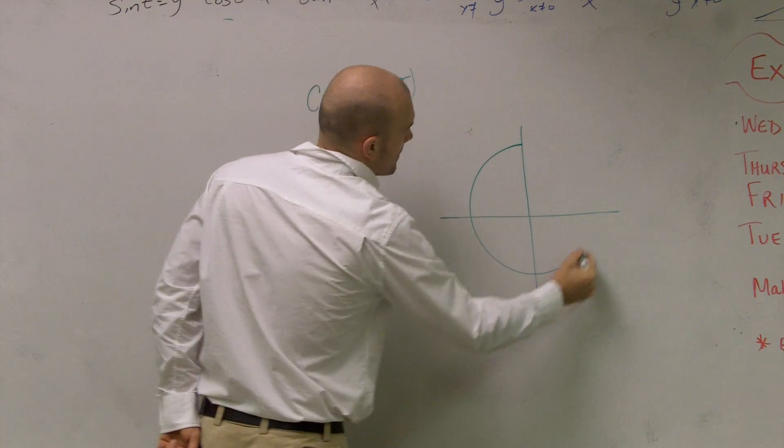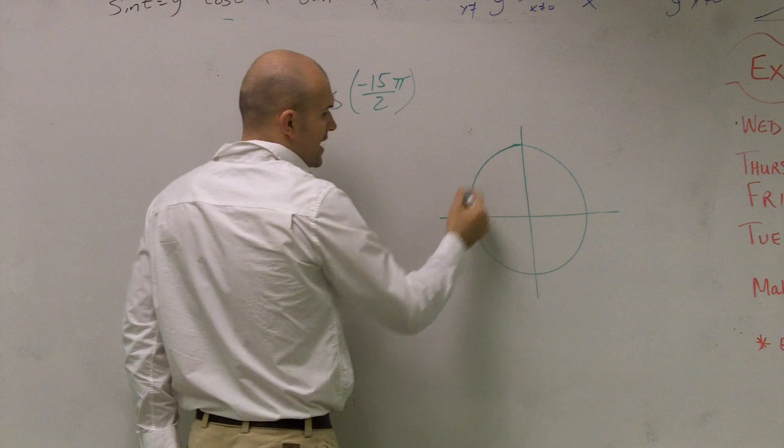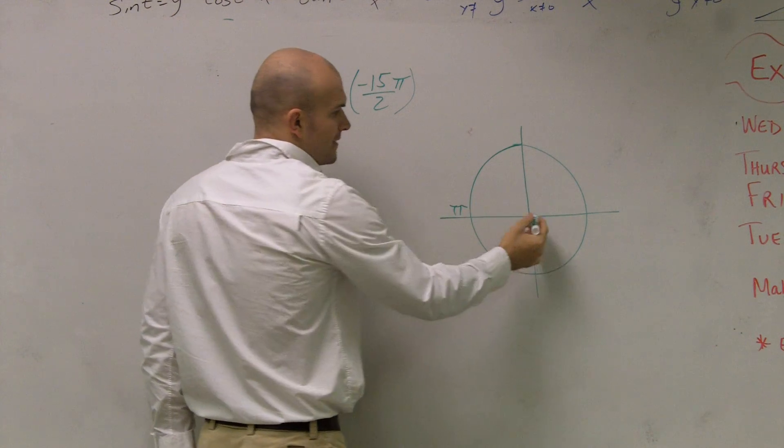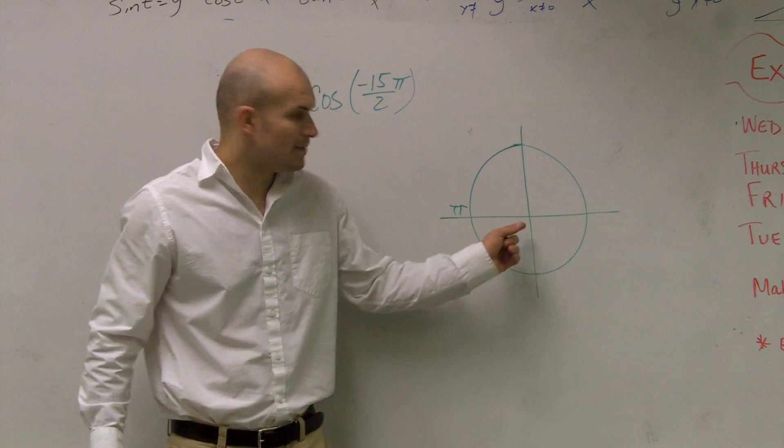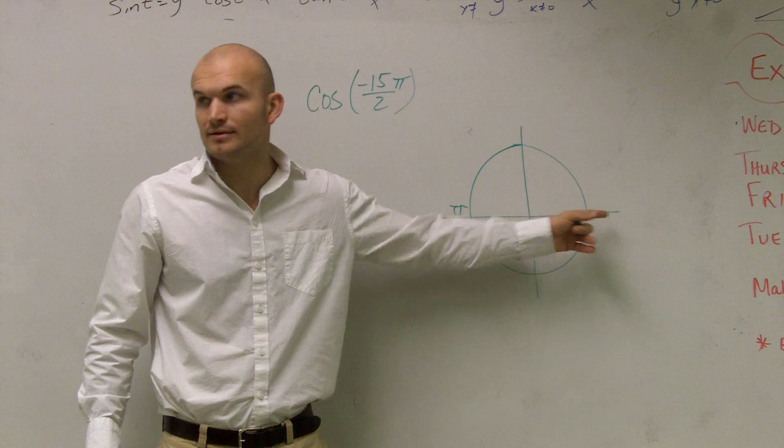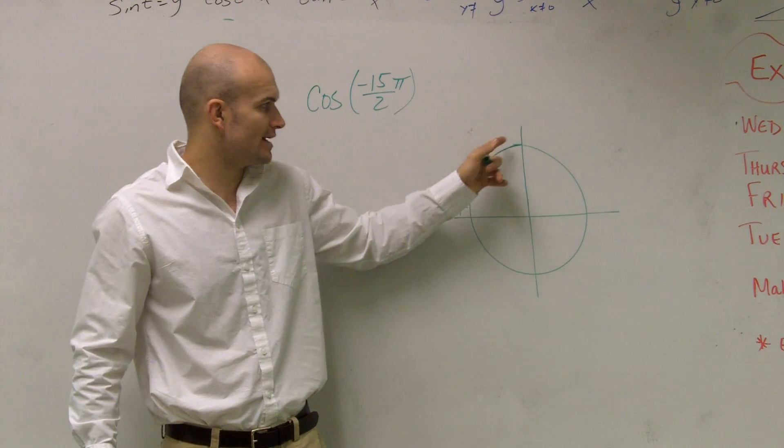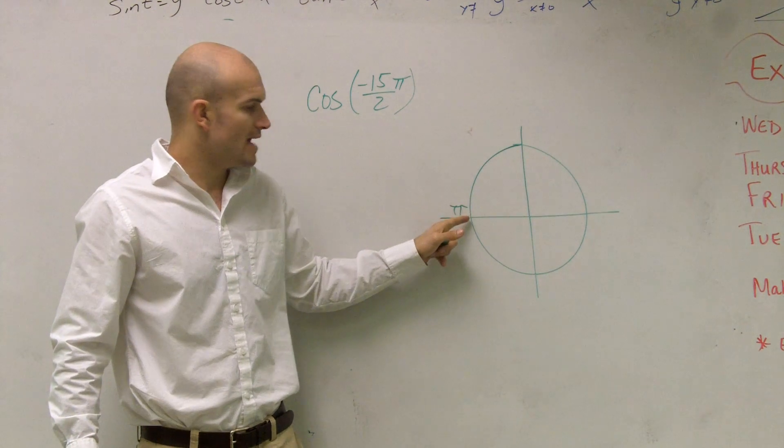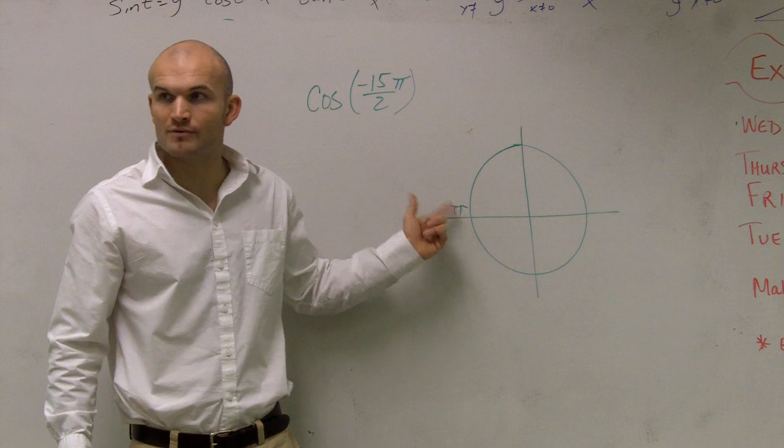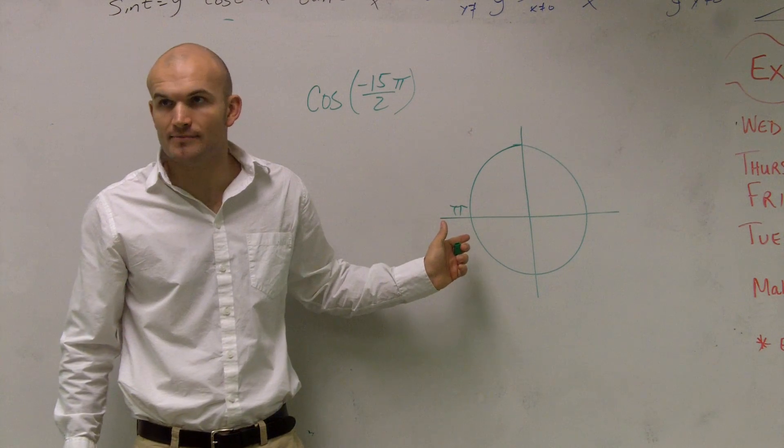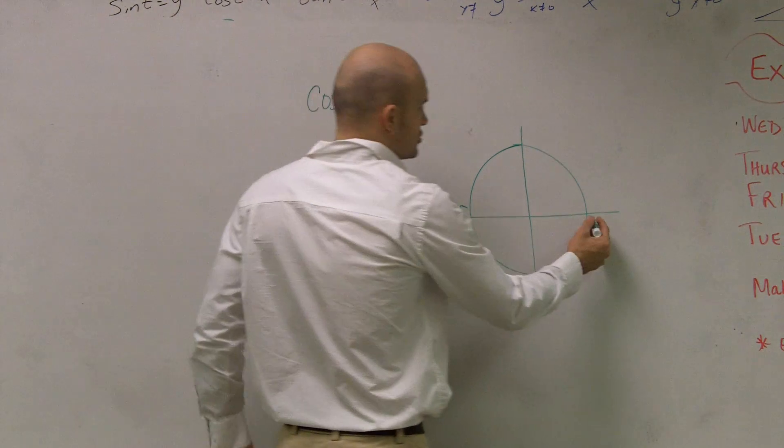When you guys see the unit circle, remember if we start here, halfway around is what we call π because you have π radians around. Radian is going to be your radius wrapped around: one radian, two radians, three radians. Halfway around is 3.14159, which we say is π. All the way around is what we call 2π.